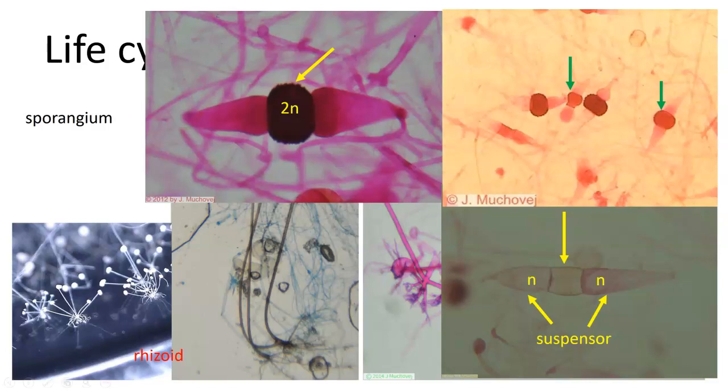When we look at the Zygomyces, it's a very interesting group. They have coenocytic mycelium, they reproduce sexually, and they tend to be problematic on stored products.